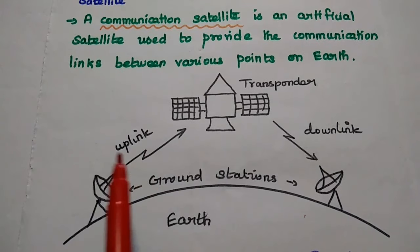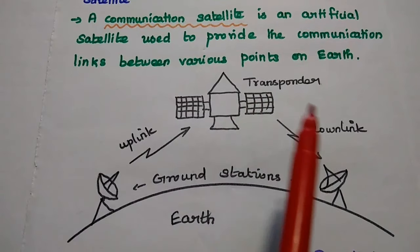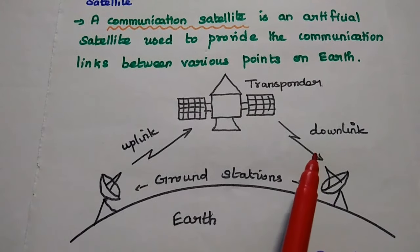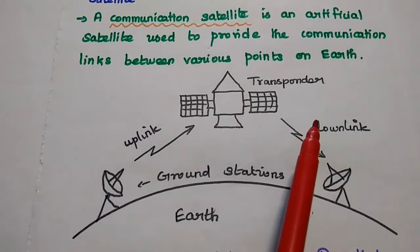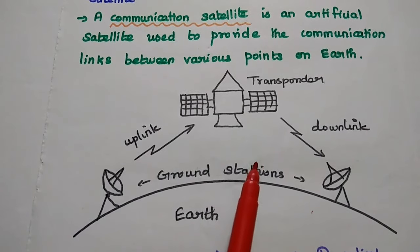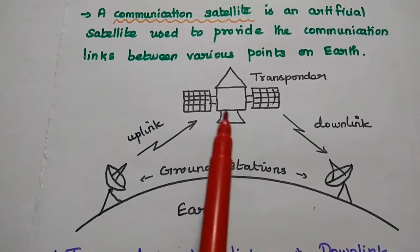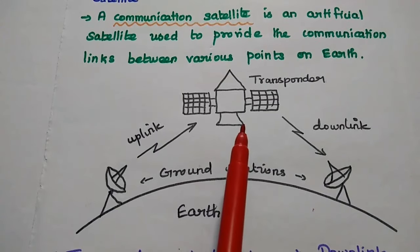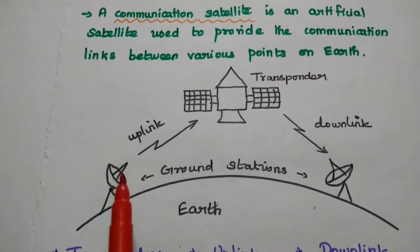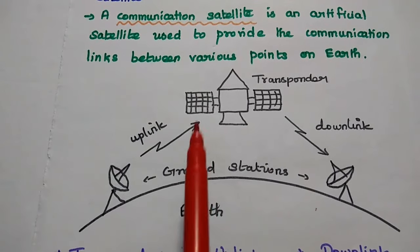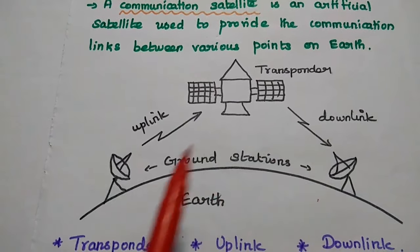The uplink is the channel through which the signal is transmitted from earth station to satellite. Similarly, the downlink is the channel through which the signal is transmitted from the satellite to the earth station. The transponder is nothing but the transmitter and responder — it performs both transmission and reception. It consists of radio receivers, transmitters, and amplifiers. It receives the signal from the uplink, strengthens the signal, and transmits it from the satellite to the earth station.